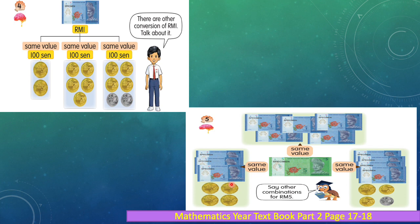Four 50 cent coins make five ringgit. Another way is four one-ringgit notes, one 50 cent coin, two 20 cent coins, and one 10 cent coin also makes five ringgit. This is conversion.